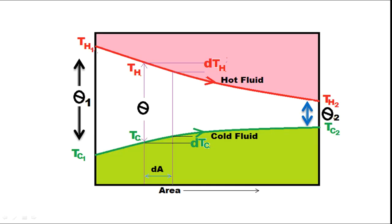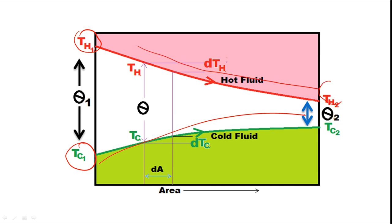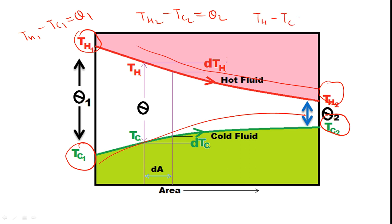This is the diagram for a parallel flow heat exchanger. This shows the inlet temperature of hot fluid and inlet temperature of cold fluid. As the fluids move through the exchanger, the temperature of the cold fluid increases and the temperature of the hot fluid decreases. The final temperature of hot fluid is T_H2 and of cold fluid is T_C2. The difference T_H1 minus T_C1 is denoted by theta_1, and T_H2 minus T_C2 is denoted by theta_2. The temperature difference at any point is denoted by theta.